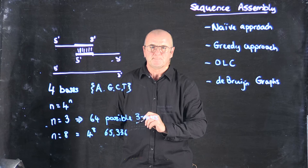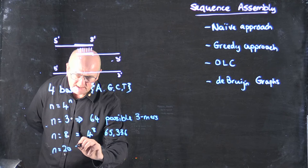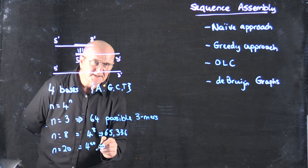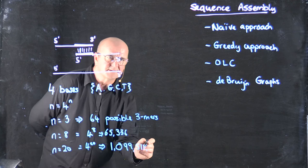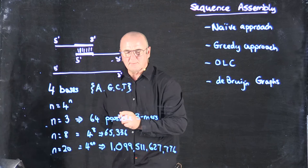And then when n is 20, there are 4 to the 20 possibilities. And so we would expect to find this sequence really quite rarely, approximately somewhere around this. So about once every billion bases, we would expect to find a 20-mer.